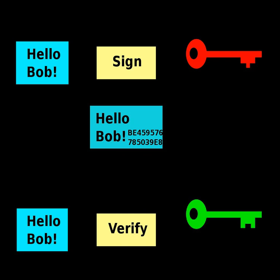Two main properties are required. First, the authenticity of a signature generated from a fixed message and fixed private key can be verified by using the corresponding public key. Secondly, it should be computationally infeasible to generate a valid signature for a party without knowing that party's private key.